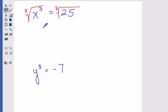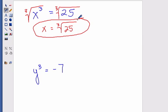Maybe x to the third equals 25. And how about y to the third equals negative 7. Now we can solve both of these. We start with the top problem here. We take the cube root of both sides. And we get x equals the cube root of 25. And 25 is just 5 times 5, so that cannot be simplified any further. And so that's the answer.